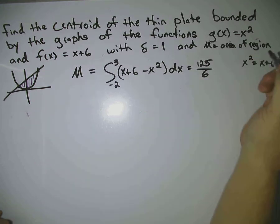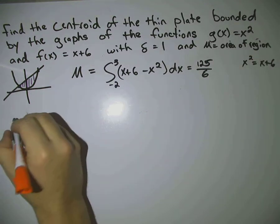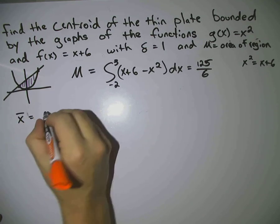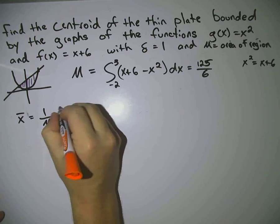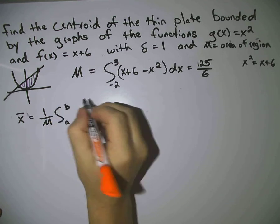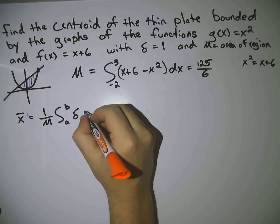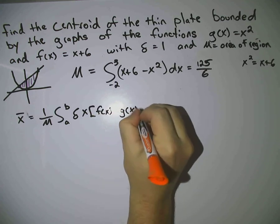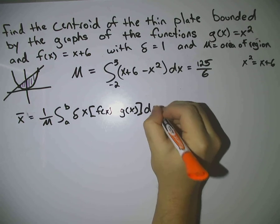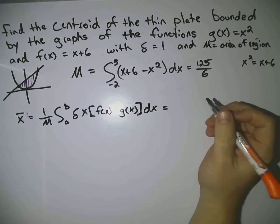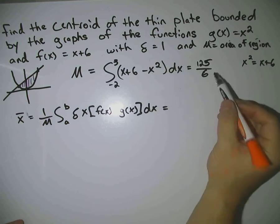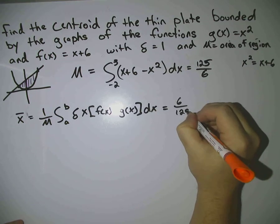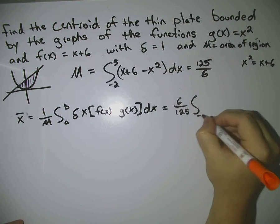The next thing you want to do is find x bar and y bar. The formula for x bar is 1 over the mass, the integral of a to b sigma x, and then it's top minus bottom. So in ours, we have 1 over m. Well, if you just flip this fraction, you get 6 over 125. The limits are the same, negative 2 to 3.